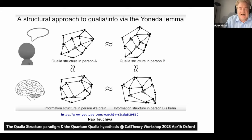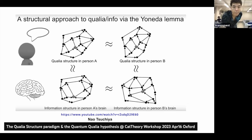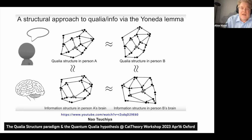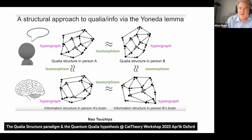This right here is a slide that I took from one of NAW's recent talks, where he is showing one of the key ideas of his that inspired me: that there should be isomorphic relationships between both certain kinds of abstractions of brain activity — so information structure shown here at the bottom of two people, person A and person B — and the qualia structure of each of these people. The curly versions of the equal sign denote isomorphism, so there should be isomorphic relationships all around. And if that's true, what we're actually dealing with is isomorphisms between certain mathematical structures that we call hypergraphs.